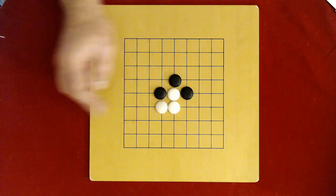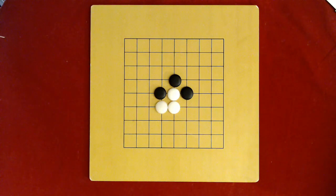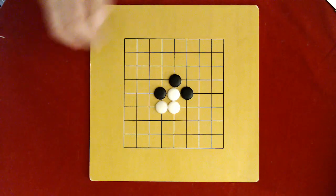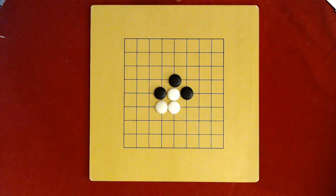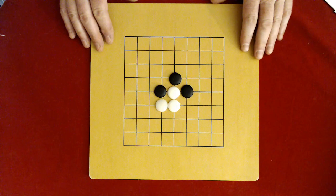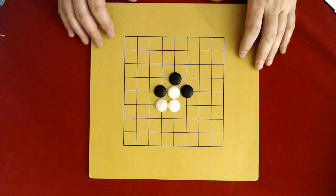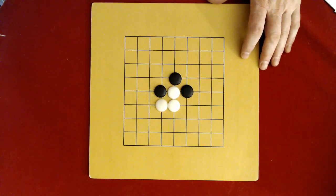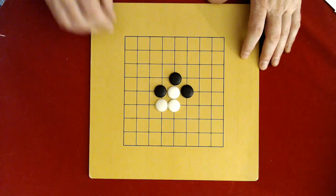So white might try something like that, and so on. Black can do different things. Anyway, this gets the beginners into a tactical battle right away, and they can see how to capture. Once again, whoever captures first in this game wins. So you don't think about territory, you just think about capturing.